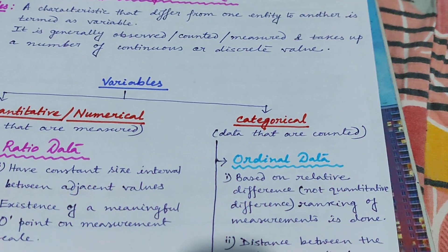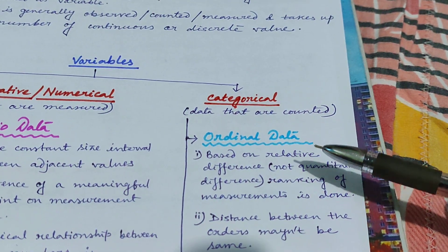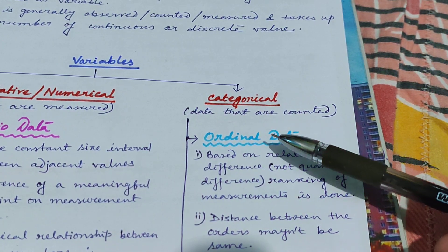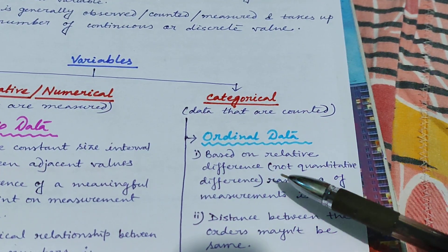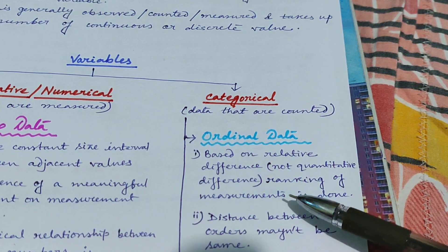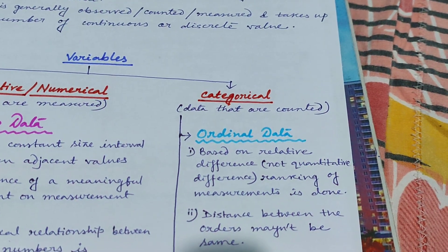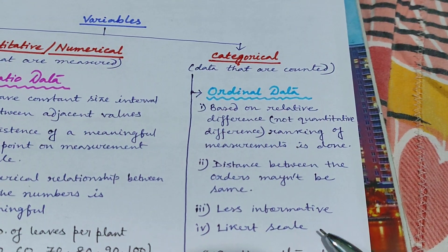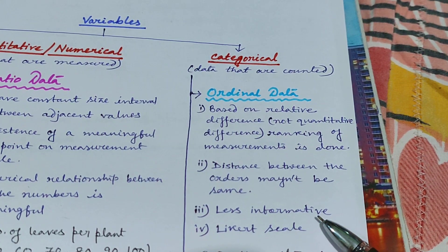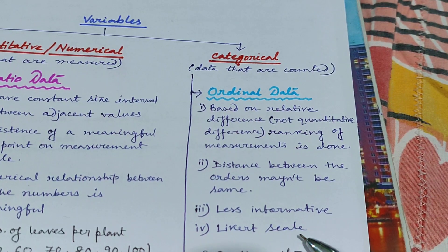Coming to categorical data — these are data that are not measured but counted. The first type is ordinal data. From the name, it is clear there is some kind of order or ranking system, and this ranking is based on relative difference, not quantitative difference. As a result, ordinal data is less informative than ratio or interval data, and it is usually measured on a Likert scale.